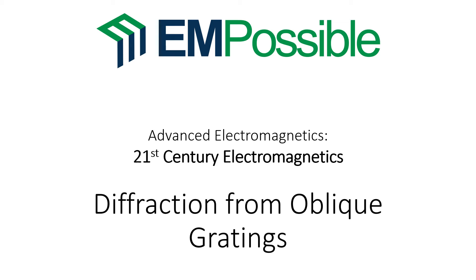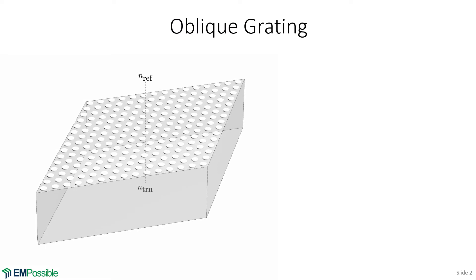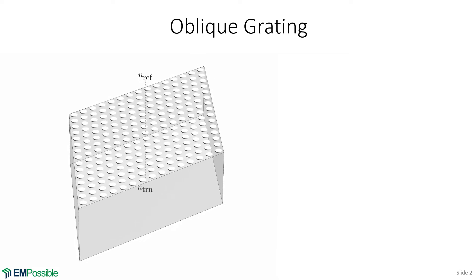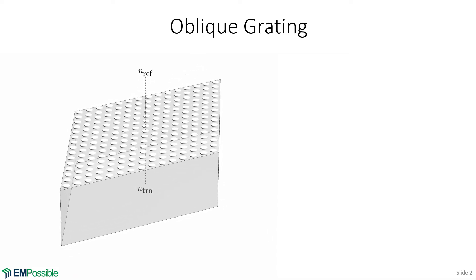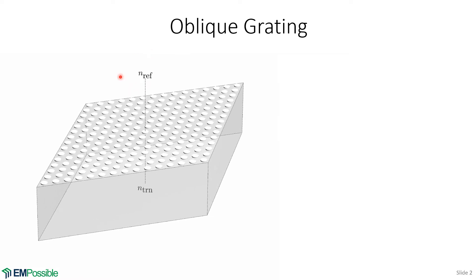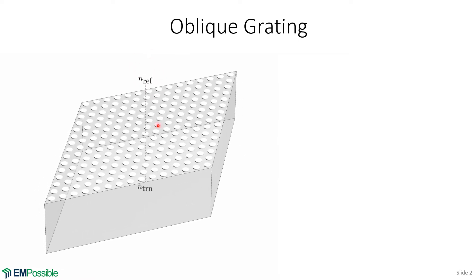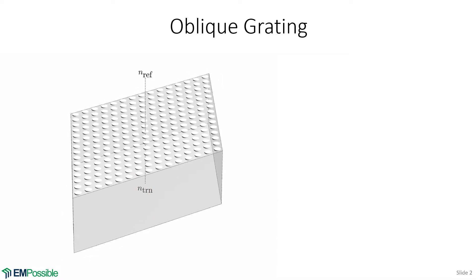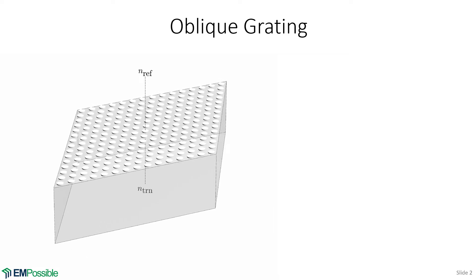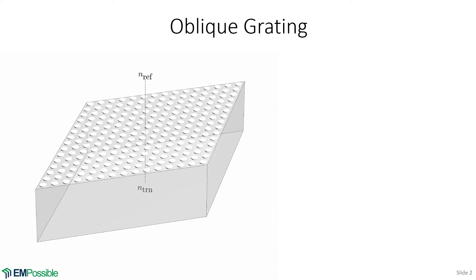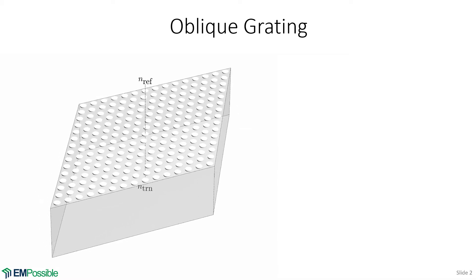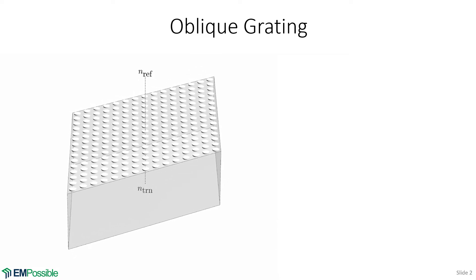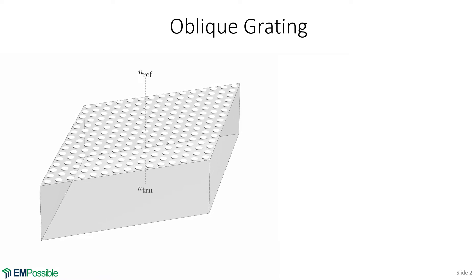Diffraction from oblique gratings. We start our discussion by looking at a hexagonal diffraction grating. It has a refractive index above the diffraction grating in the reflection region, NREF, and in the substrate or the transmission region, a refractive index of NTRN for refractive index transmission region. While we're looking at a hexagonal array here, there's nothing I'm going to talk about that requires this to be exactly a hexagonal array, so it can be any sort of oblique symmetry.